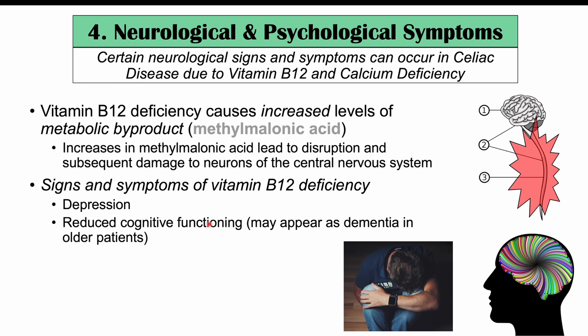The last atypical finding is reproductive system dysfunction, likely due to nutrient deficiencies causing hormonal imbalances. In female patients, this can include delayed menarche, amenorrhea — absence of menstrual cycle for at least six months — and infertility. Male patients with celiac disease can also experience impotence and infertility, with an increased risk compared to non-celiac patients.